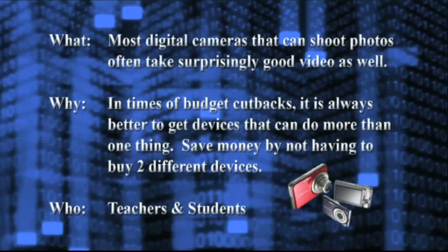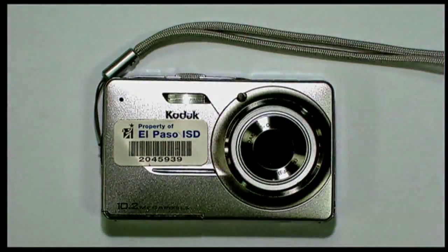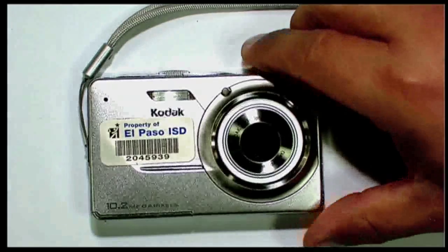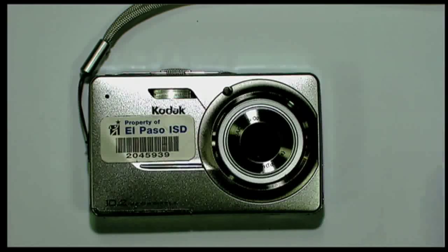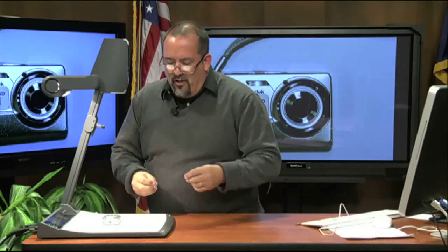We're going to look at some of the limitations, some of the things it can and can't do, and we're going to show you actually how to do it. We're going to look at a typical digital still camera — this real inexpensive Kodak EasyShare camera. Your campus probably has lots of digital still cameras, so what you need to do is go out and find them, and once you find them, you can start using them to record video.